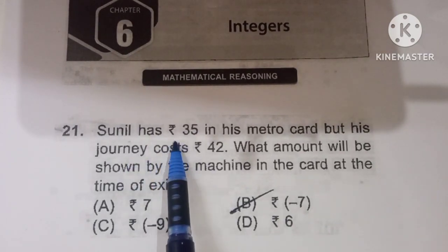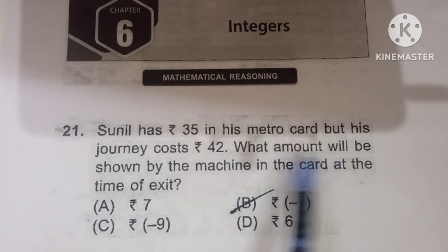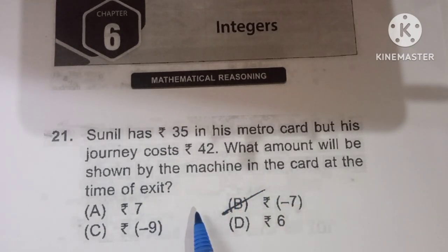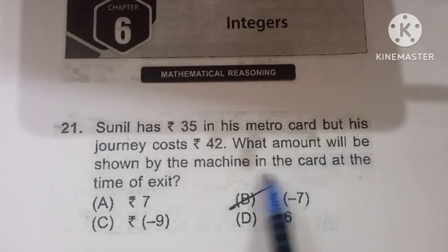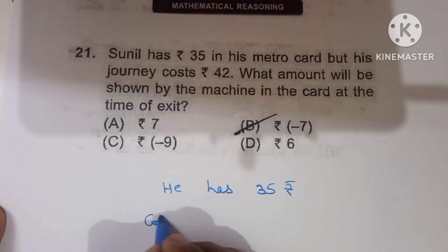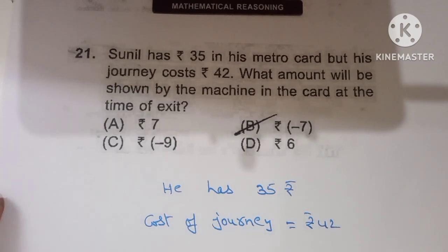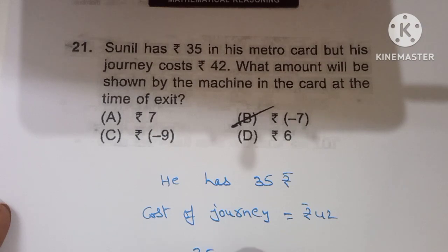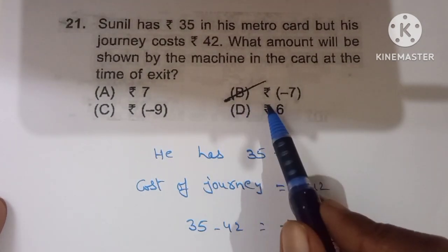Twenty-first question: Sunil has 35 rupees in his metro card but his journey costs 42 rupees. The machine shows 35 minus 42, which is minus 7. So the machine shows minus 7 rupees at exit. Option B is the correct one.